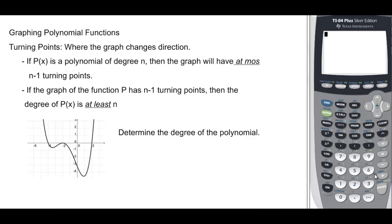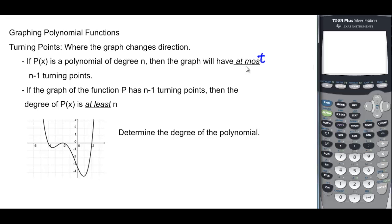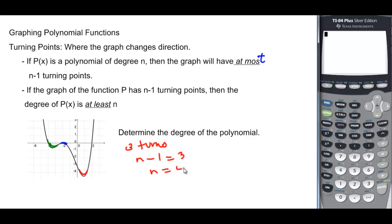Now let's look at how turning points affect polynomial graphs — that's just where the graph changes direction. If p(x) is a polynomial of degree n, then the graph will have at most n minus 1 turning points. It's also true that if the graph has n minus 1 turning points, then the degree must be at least n. Looking at this graph, there's one turn, a second turn, and a third turn — three turns total. So n minus 1 equals 3, meaning n must be degree 4.